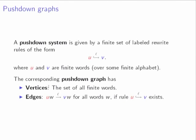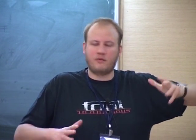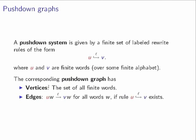I would now like to define ground rewrite systems. They can be defined as a little extension of push-down systems, but you just replace finite words by finite ranked trees. So what is a ground tree rewrite system? Instead of having finite words, you have a finite set of rules where the left-hand side and the right-hand side are both finite ranked trees.